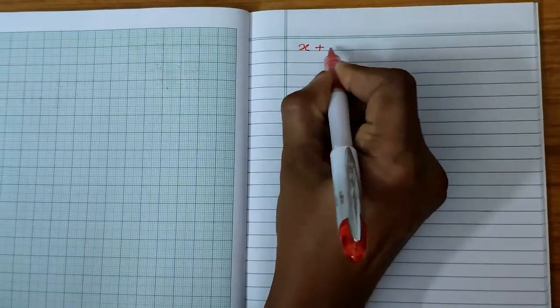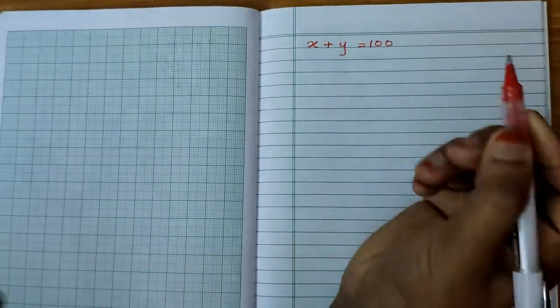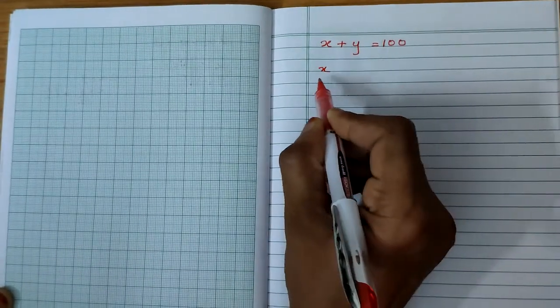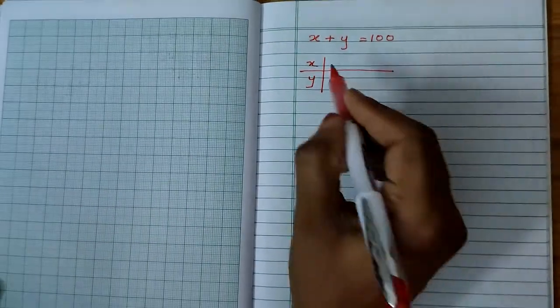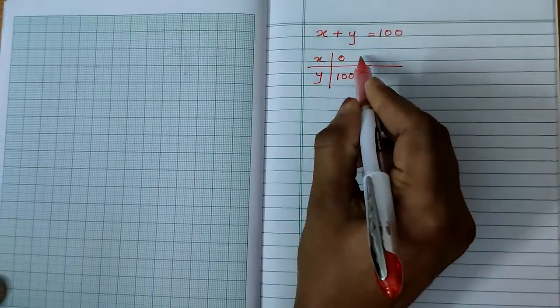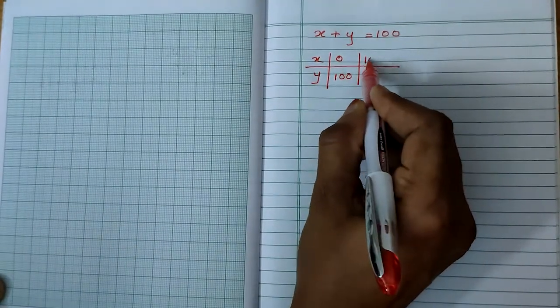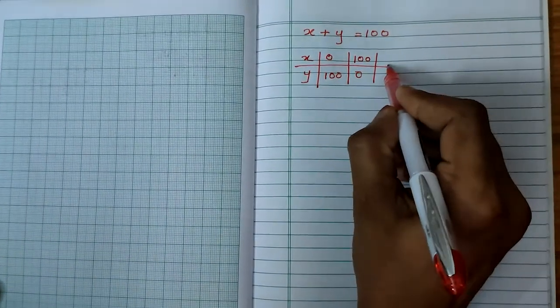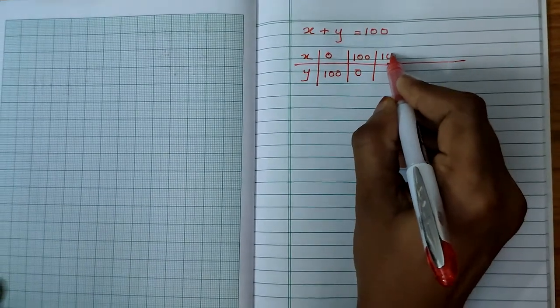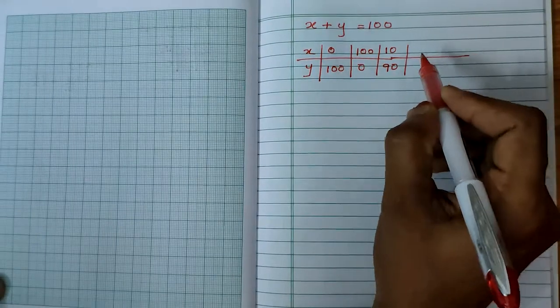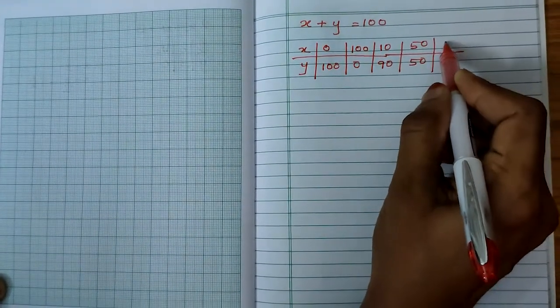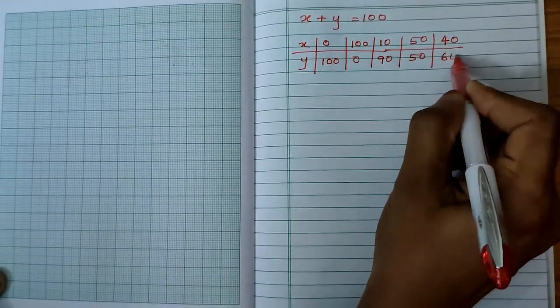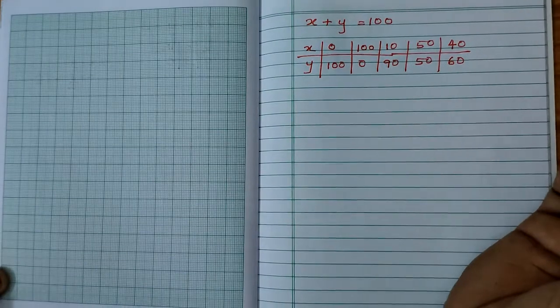One more example. Next question: x plus y equals 100. I am going to take the values. If x is 0, y will be 100. If y is 0, x will be 100. If x is 10, y will be 90. If x is 50, y will be 50. If x is 40, y will be 60. So many values we can find out. So many solutions we can find out.